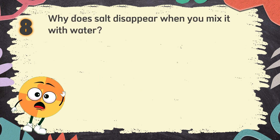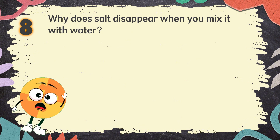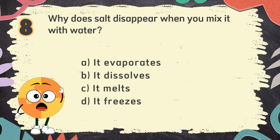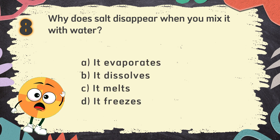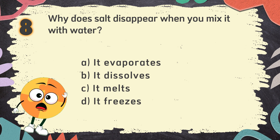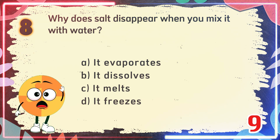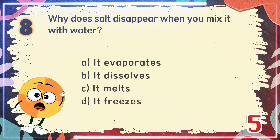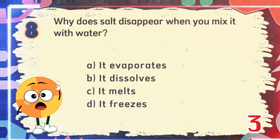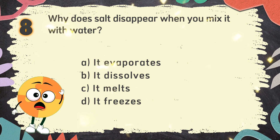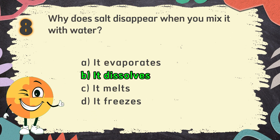Number 8. Why does salt disappear when you mix it with water? The choices are: A. It evaporates. B. It dissolves. C. It melts. D. It freezes. The correct answer is B: It dissolves.